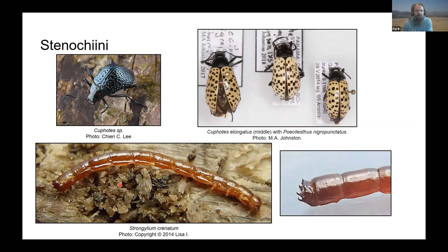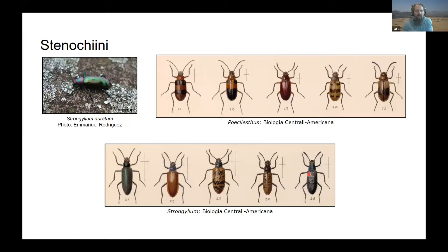This is a typical long cylindrical larva with the last abdominal segment. Most species of Strongilium have similar apical segments with turgites. They're usually more colorful — this is a fairly common species in the genus Strongilium and one of the other genera, Vicelestus. Strongilium is worldwide, incredibly diverse, and really nice-looking species too.